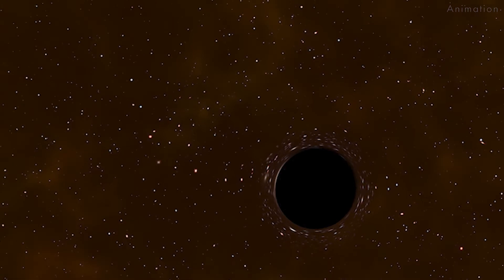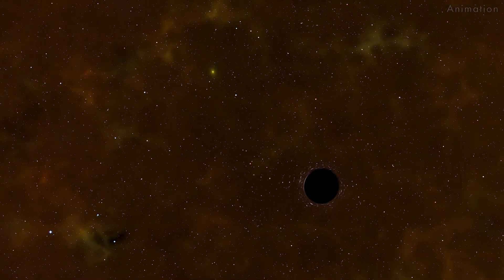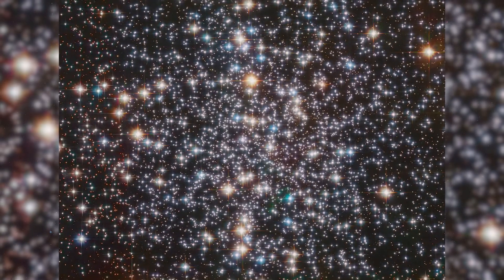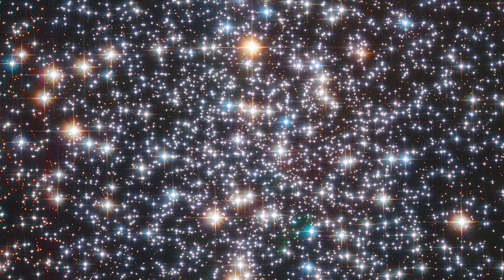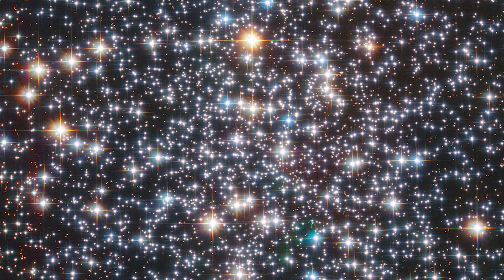Astronomers using NASA's Hubble Space Telescope have possibly detected one of these elusive intermediate mass black holes in the core of the globular star cluster Messier 4, located 6,000 light-years away from Earth.